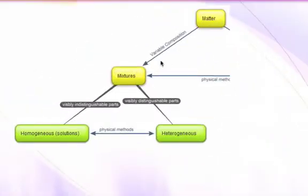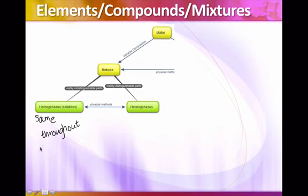On this side, we're going to start with the mixtures. Matter with a variable composition is considered a mixture, and there are two types: homogeneous and heterogeneous. Homogeneous solutions or mixtures are the same throughout. There's only one phase. So no matter where you take a sample of a homogeneous mixture, it's going to be the same. That doesn't mean it has a chemical formula, because it doesn't. It's still a mixture. But it just looks the same throughout. Some examples would be salt water, rubbing alcohol, that's a mixture of isopropyl alcohol and water.